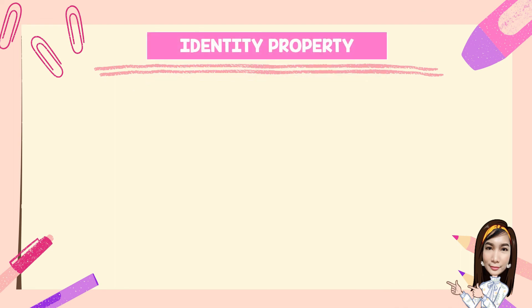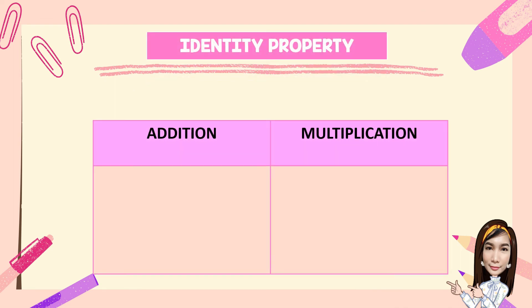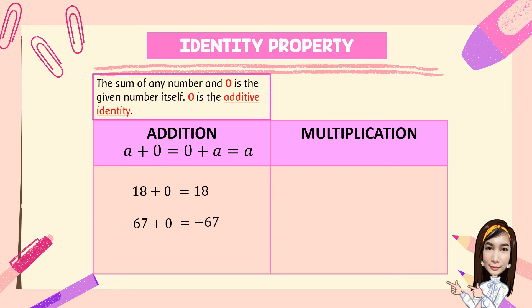Fifth, we have the identity property. For addition: A plus 0 is equal to 0 plus A, and that is equal to A. For example, 18 plus 0 is equal to 18, and negative 67 plus 0 is equal to negative 67. So here, the sum of any number and 0 is the number itself. 0 is the additive identity — any number added to 0 gives the number itself.